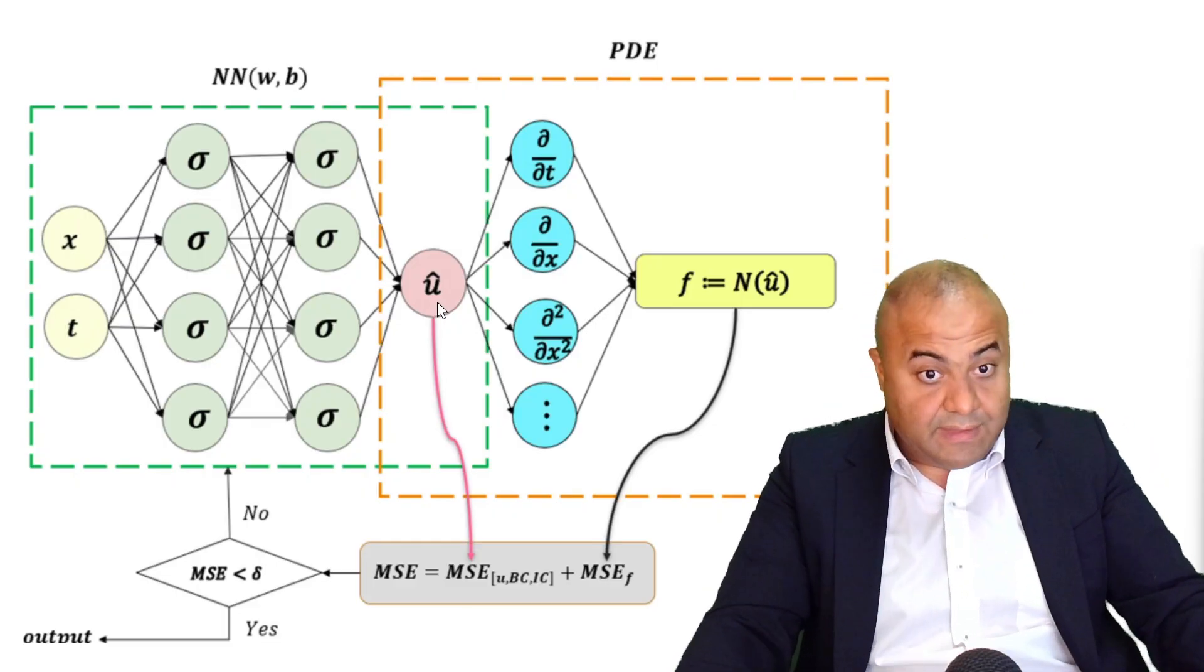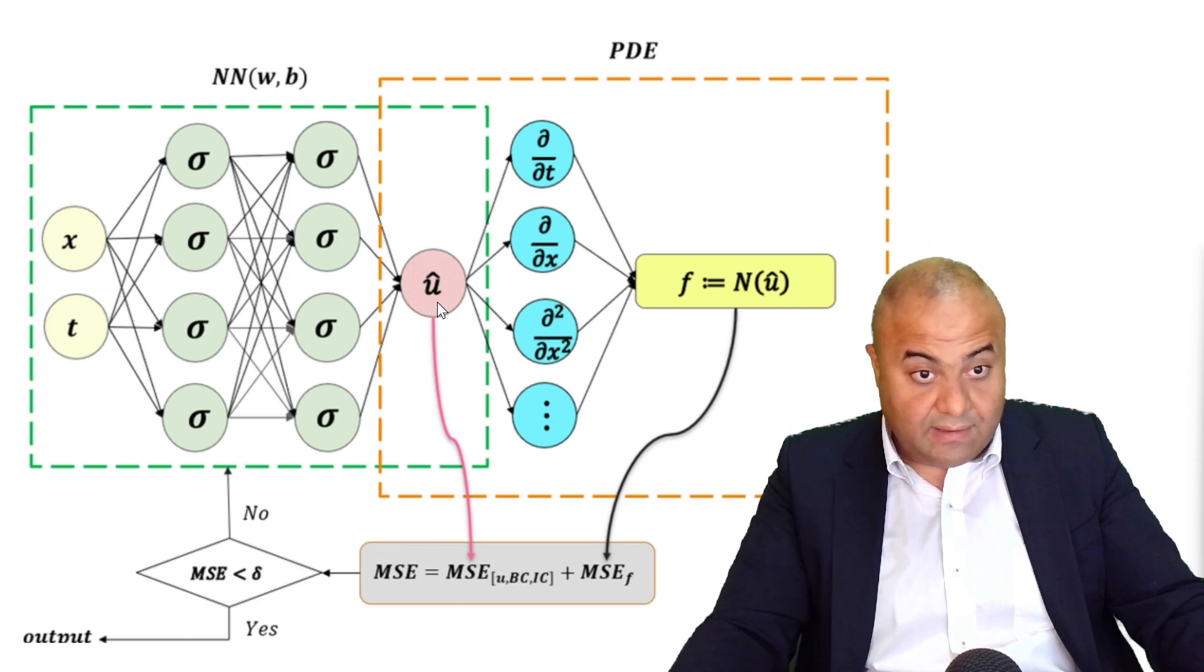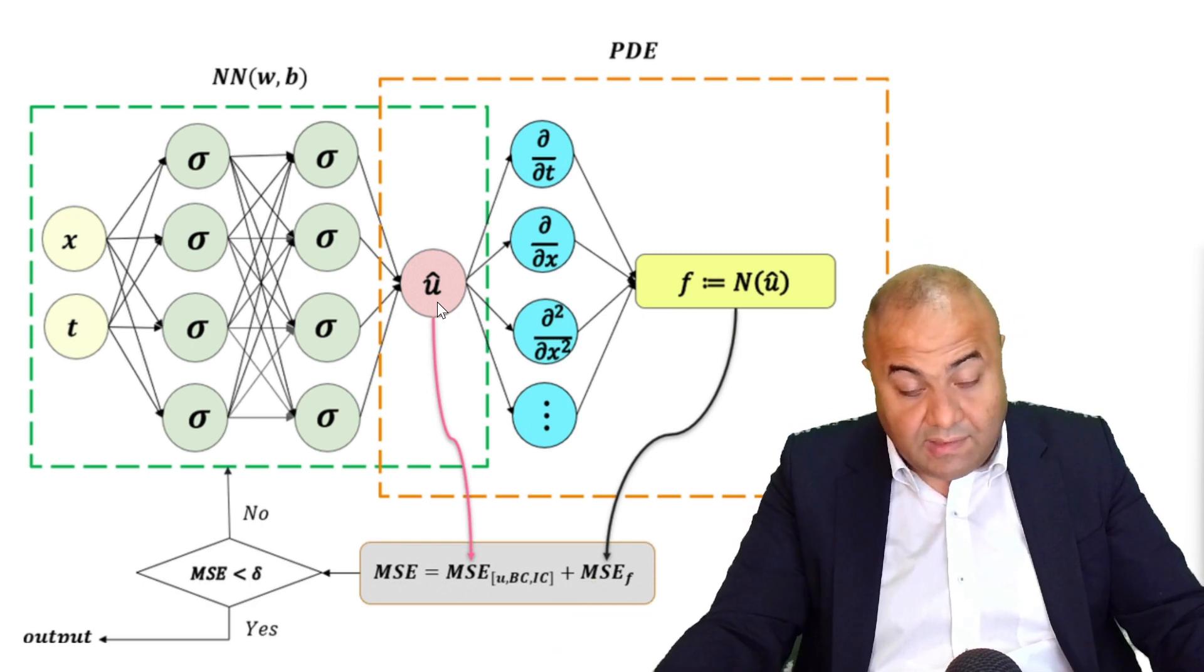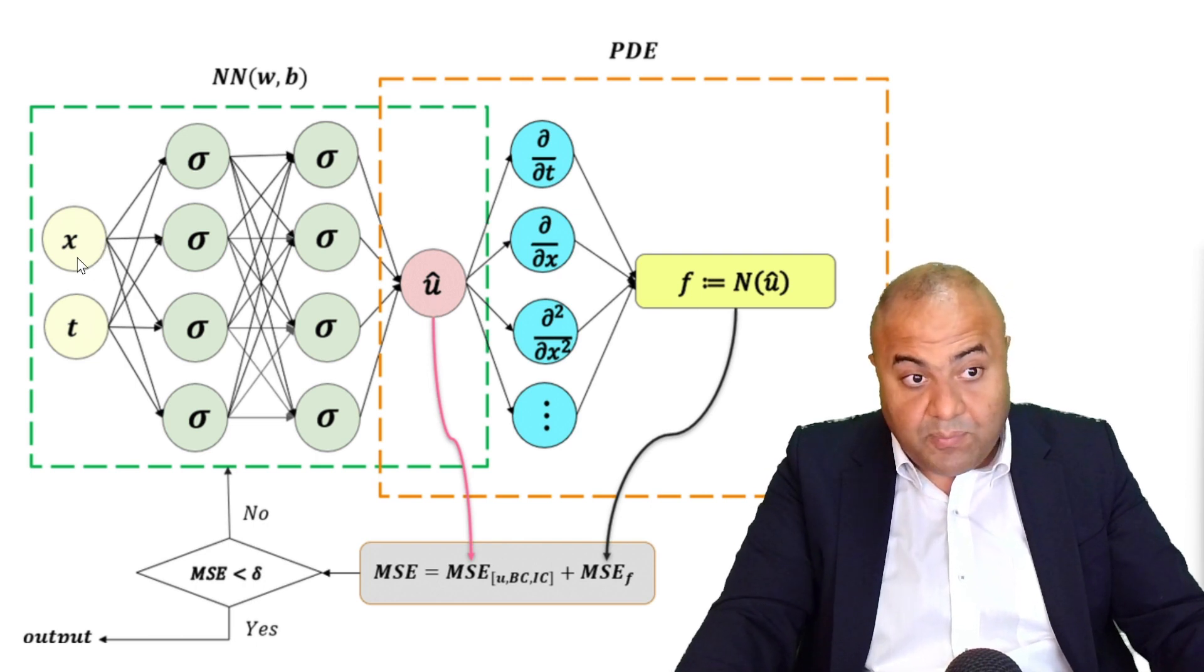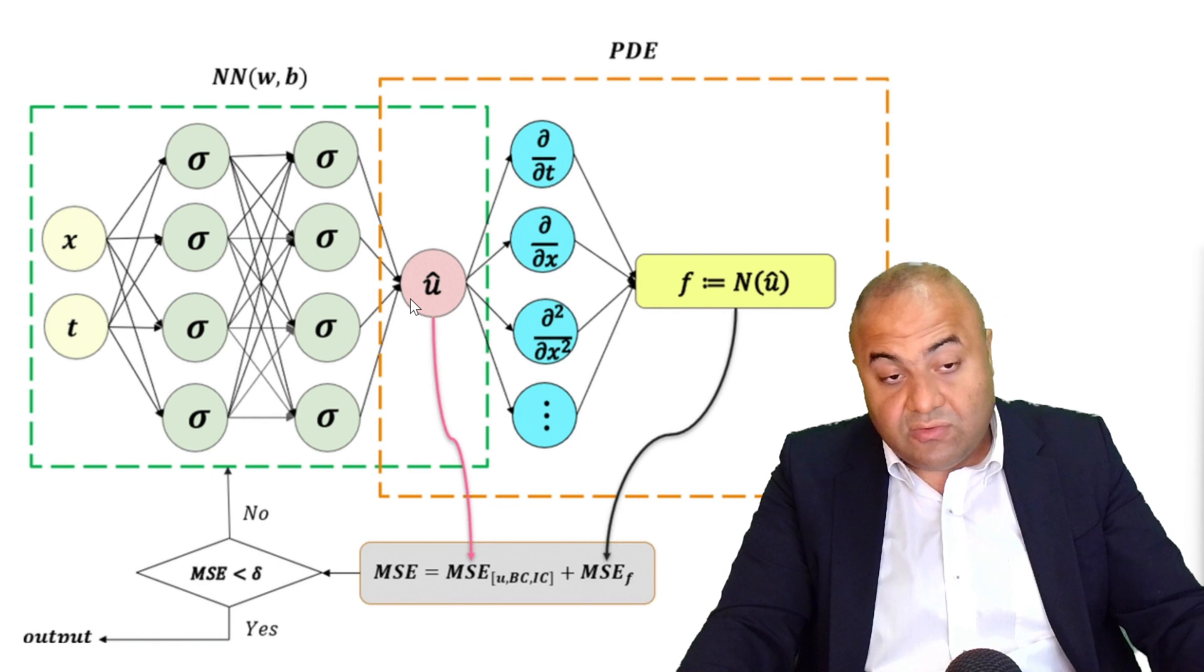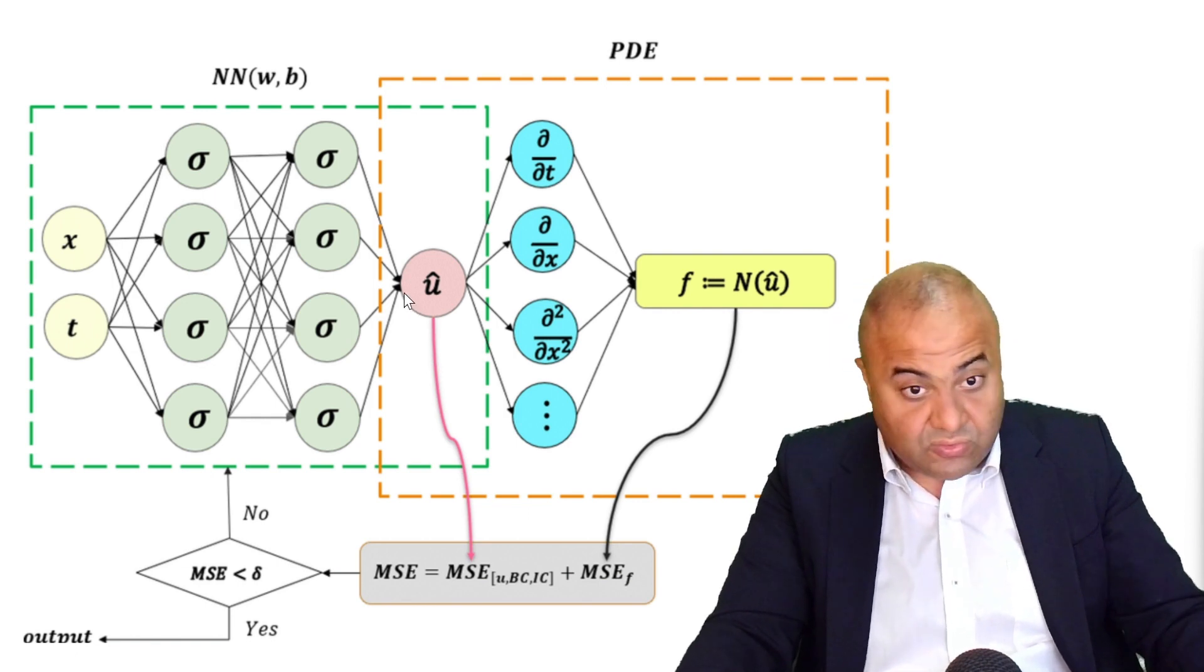To solve the heat equation with a deep neural network, we will have the neural network with inputs of space and time, and then we will have some hidden layers in between. These hidden layers will be connected to the output, which is the thing we're trying to predict,